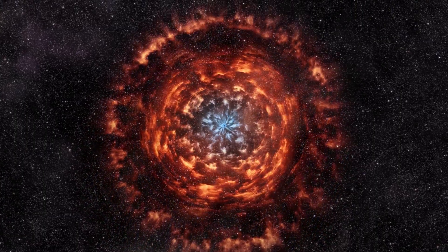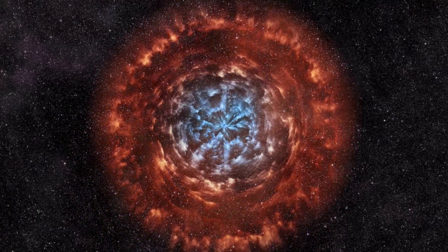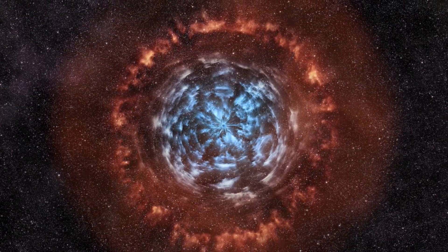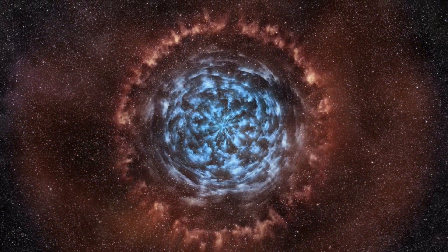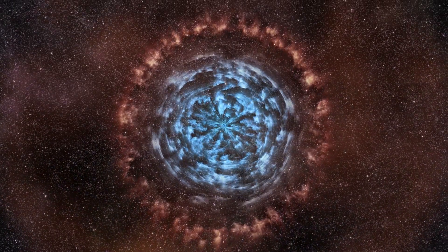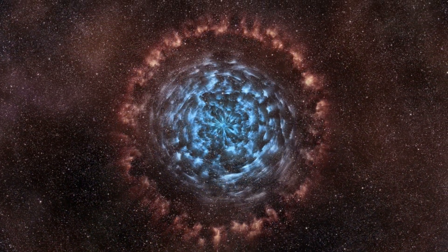Then it evolved into something called the blue supergiant, which is a bit hotter and has a faster wind. The faster wind caught up with the slow wind and made a ring of dense material.